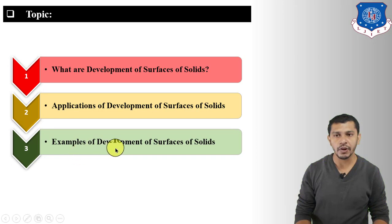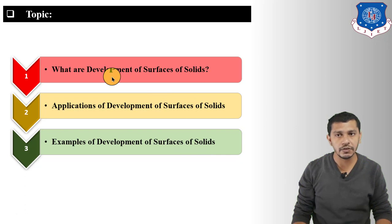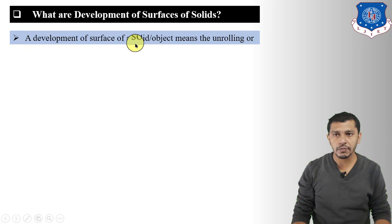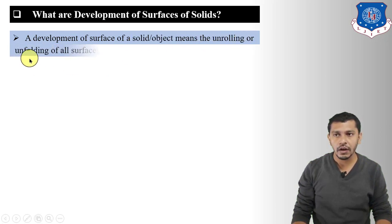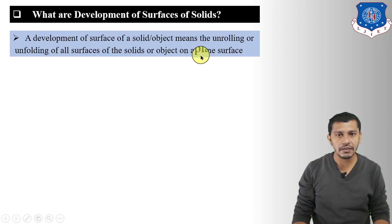Development of surface of a solid or object means the unfolding or unrolling of all surfaces of the solid or object onto a plane surface.